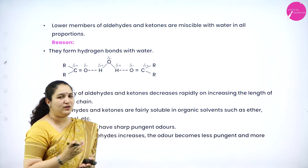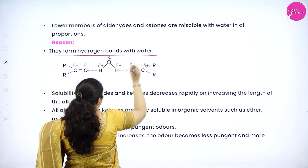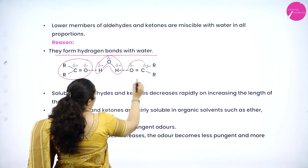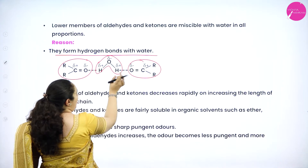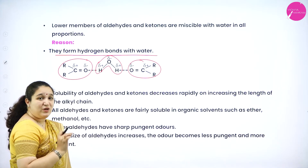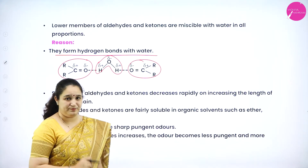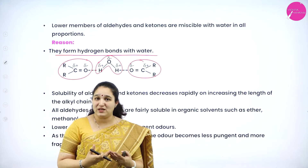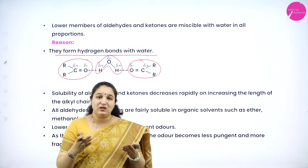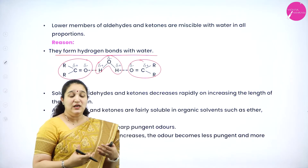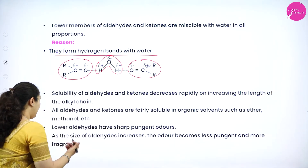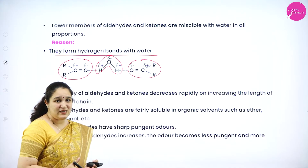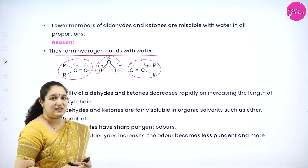The lower members are soluble in water mainly because of formation of hydrogen bonds between the oxygen of the carbonyl group and the hydrogen of water. Regarding odor, lower members of aldehydes and ketones have a strong pungent odor, but as the chain length increases the pungent odor reduces and fragrance goes on increasing. So the higher members of aldehydes and ketones are fragrant compared to the lower members.